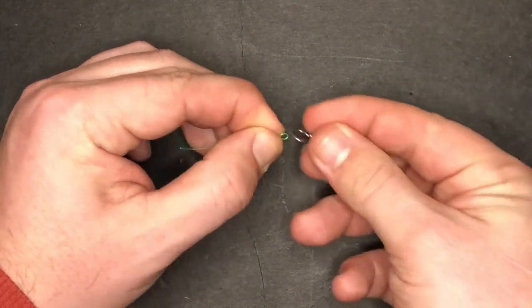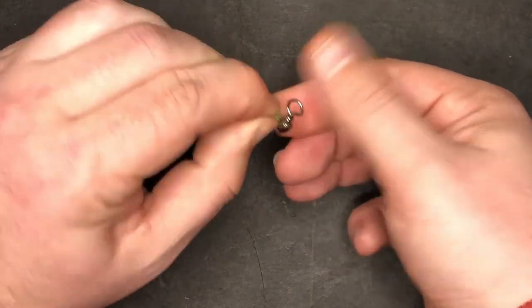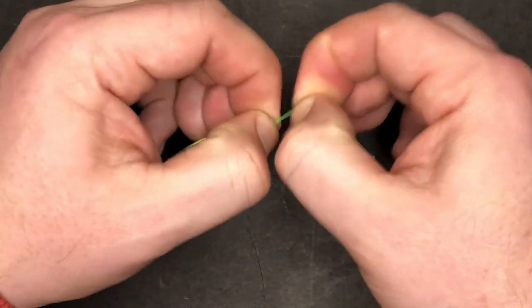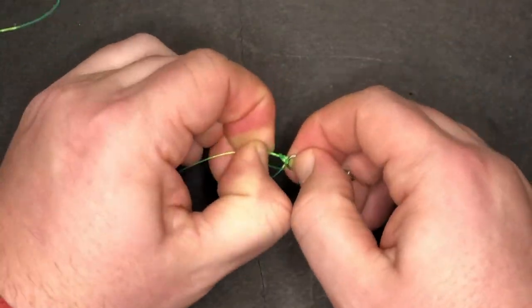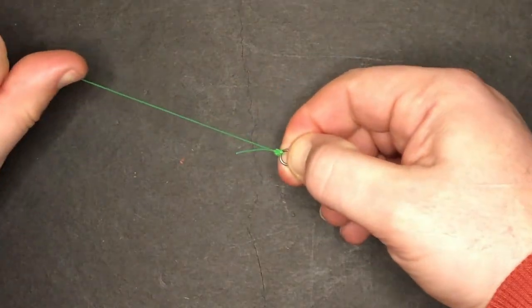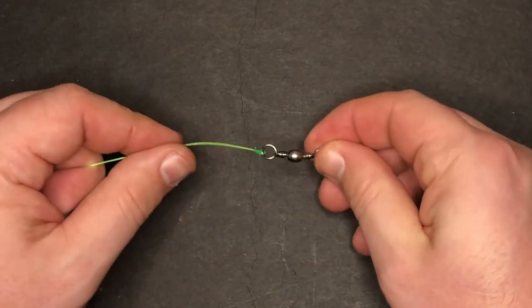To do that, I'm going to double over my line, thread it through one of the eyes of the barrel swivel, then create a basic overhand knot with a doubled over line. Pull the looped tag end all the way through and then wrap it around the barrel swivel. We'll wet it with some spit, pull on the main line to tighten it up, give the tag end a bit of a tug as well. Trim the tag end, and that's our first pallet knot.